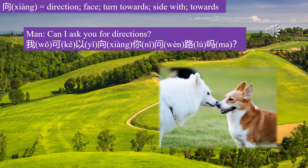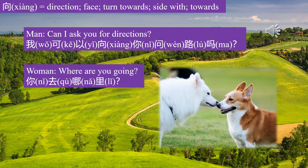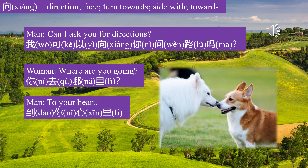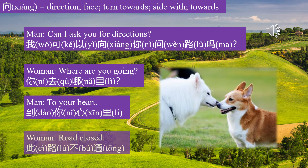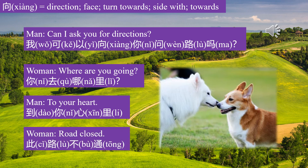我可以向你问路吗? — May I ask you for directions? Woman said: 你去哪里? — Where are you going? Man said: 到你心里 — To your heart. Woman said: 此路不通 — This road is blocked.